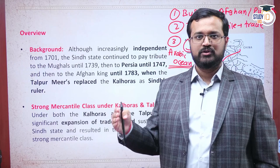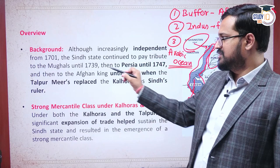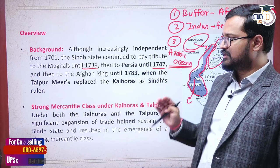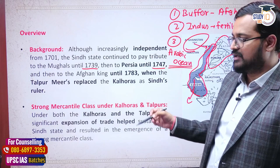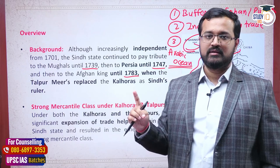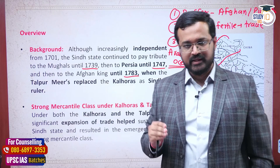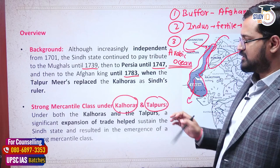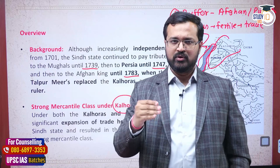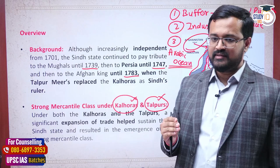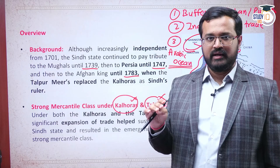Thereafter Ahmad Shah Abdali, the Afghan ruler, also entered India, and Sindh ultimately went under Afghanistan. So till 1739, they were paying tribute to the Mughals; from 1739 to 1747, under Nadir Shah's rule, to Persia; and from 1747 to 1783, when the stronger Durrani chief Ahmad Shah Abdali and his successors ruled, Sindh paid tribute to the Abdali clan. During this period, first the Kalhor chiefs and thereafter the Talpur chiefs administered Sindh locally.